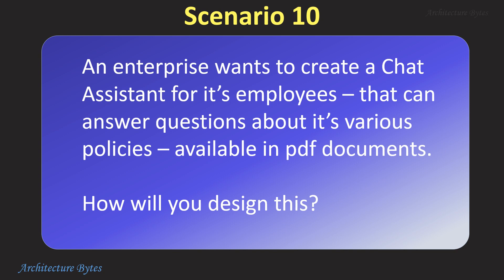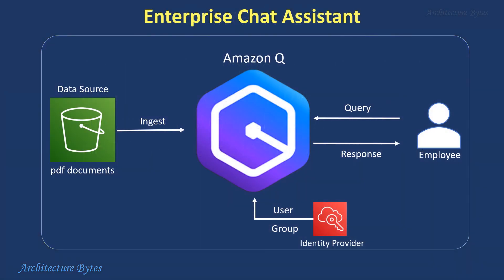An enterprise wants to create a chat assistant for its employees that can answer questions about its various policies available in PDF documents. How will you design this? We can use Amazon Q to build our solution, which is a Gen AI-powered assistant. Our data source is an S3 bucket with PDF documents, which are ingested using a retriever and synced so that Amazon Q can answer questions based on this data.